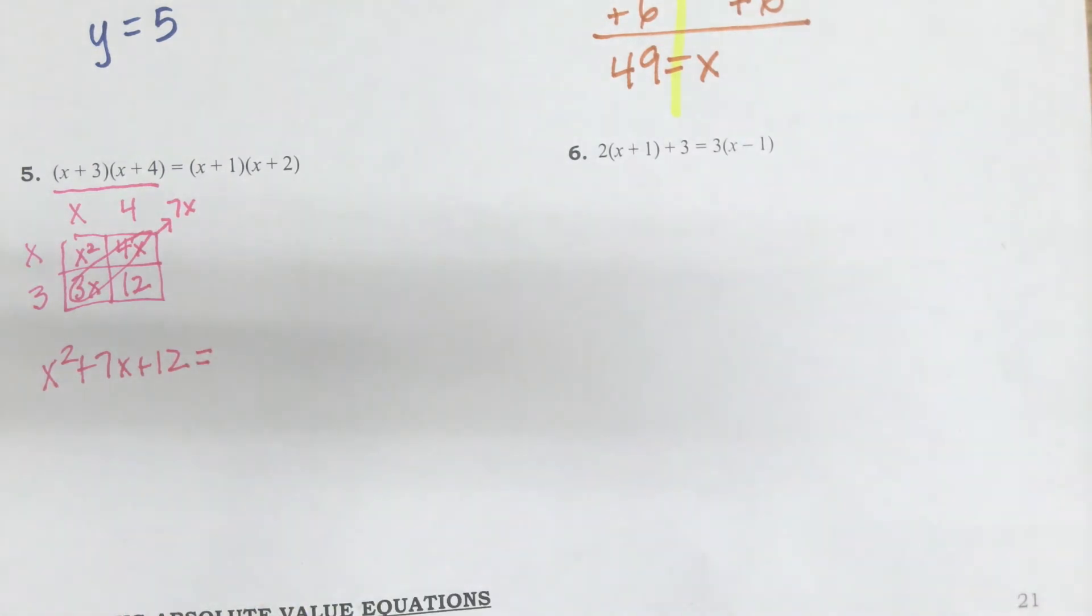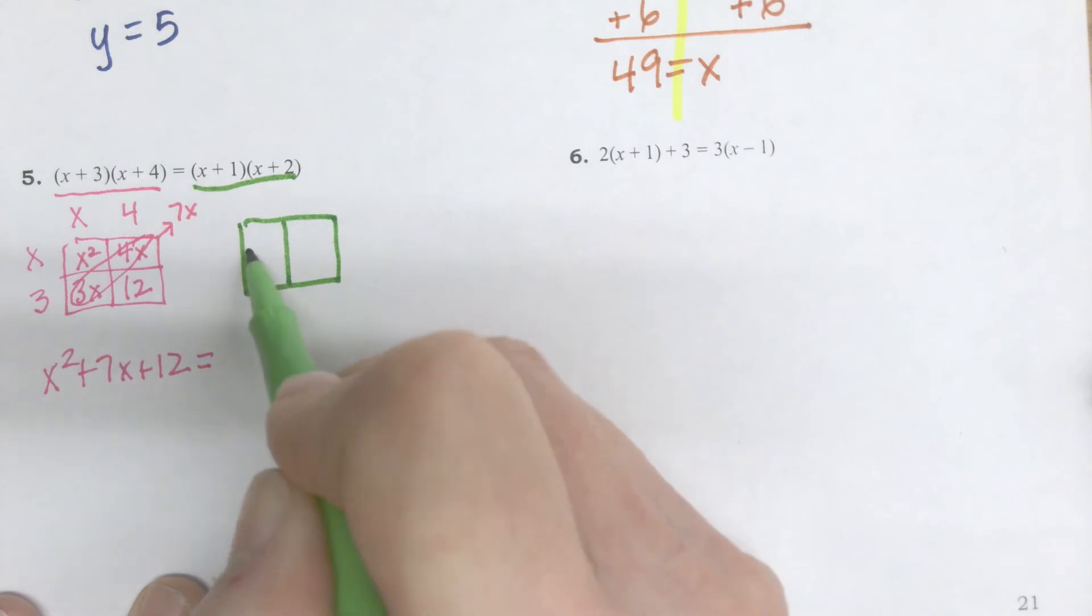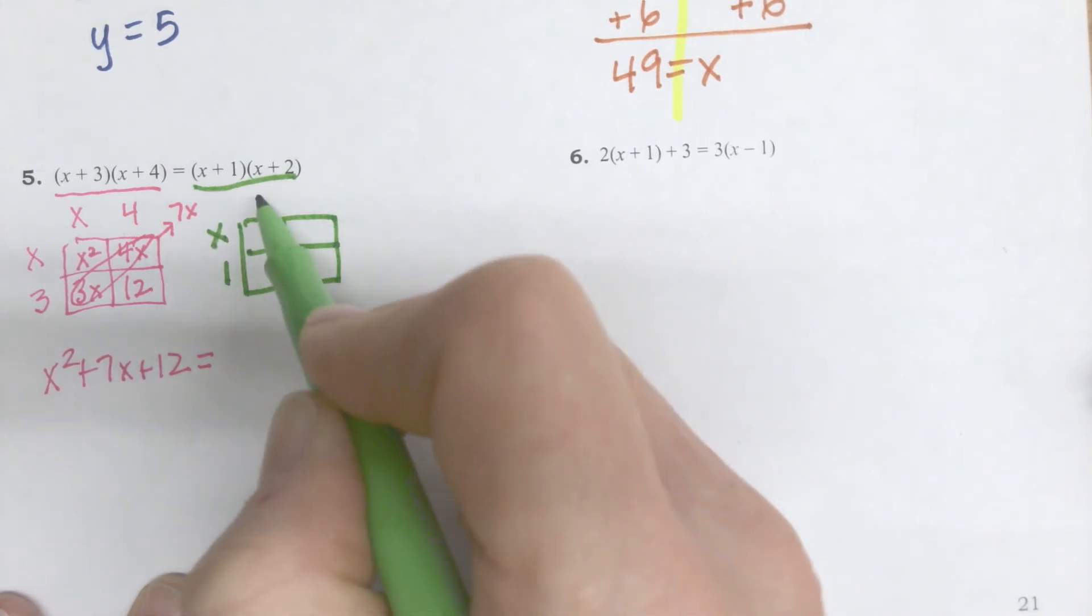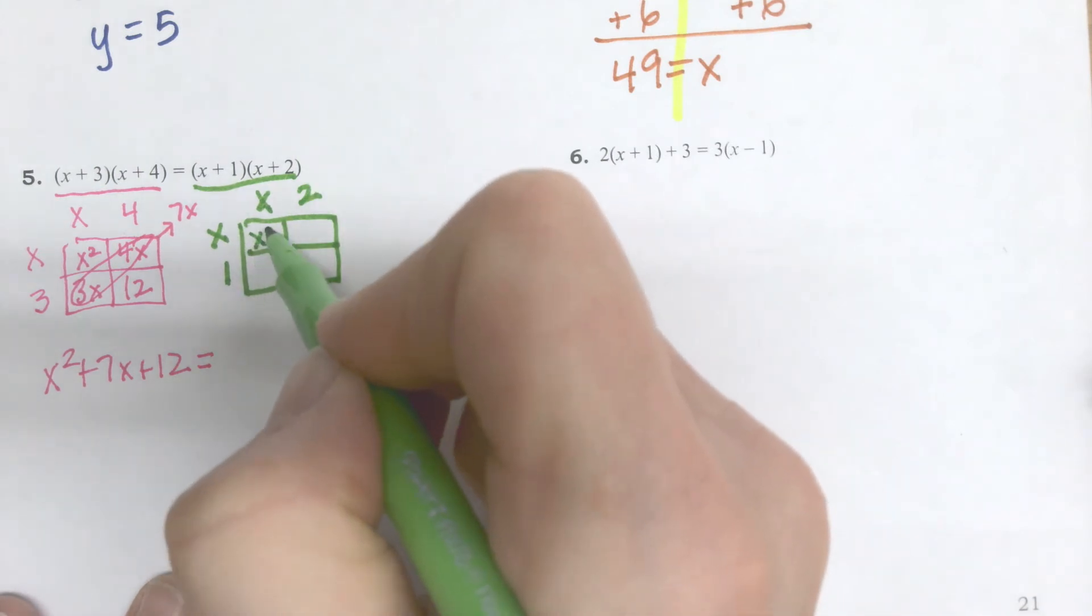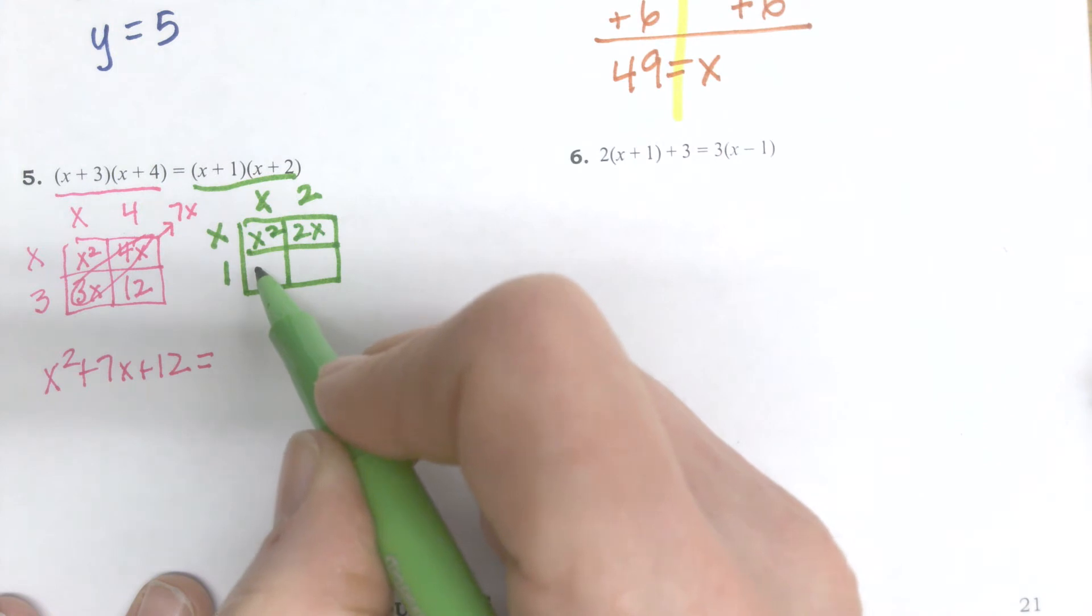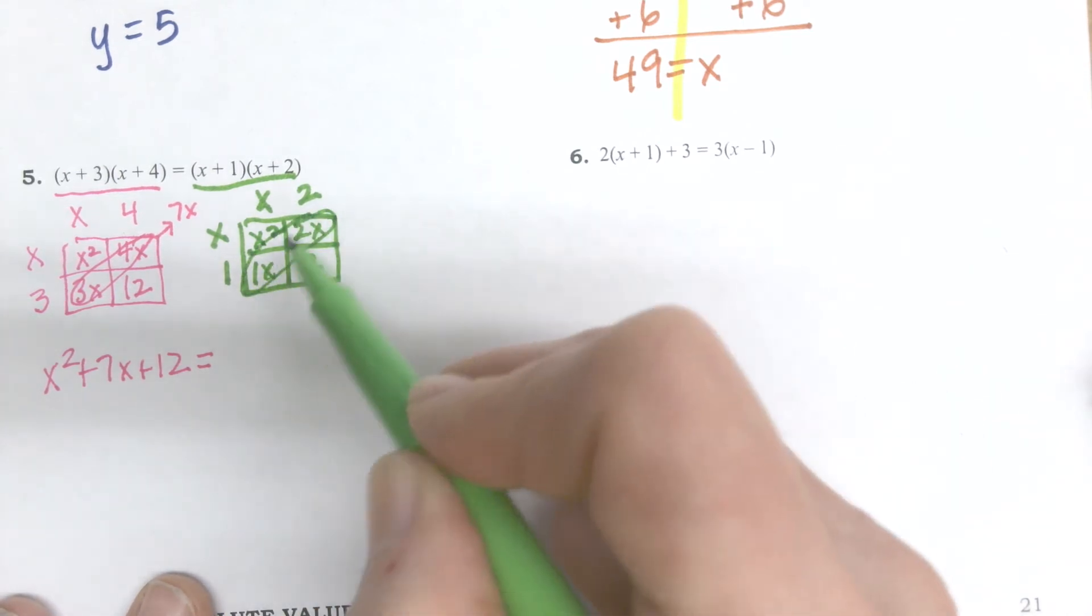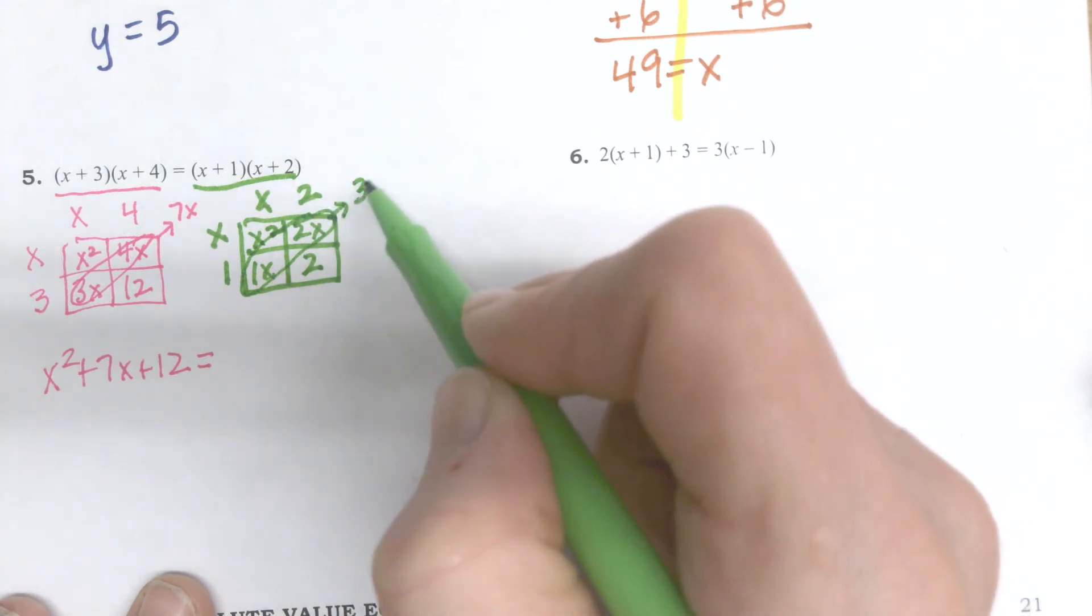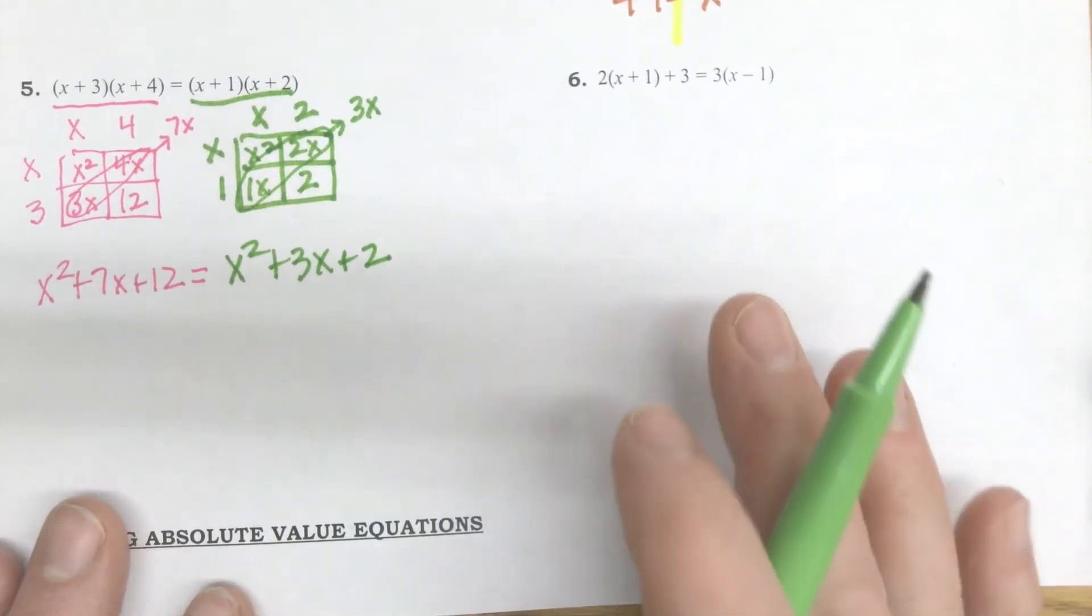Now I'll take my other color and go to the other side. Another 2 by 2, x plus 1, x plus 2. x times x is x squared. x times 2 is 2x. 1x, 1 times x. And 1 times 2 is 2. Combine those like terms. That's going to give me 3x for those two. So this one writes down as x squared plus 3x plus 2.